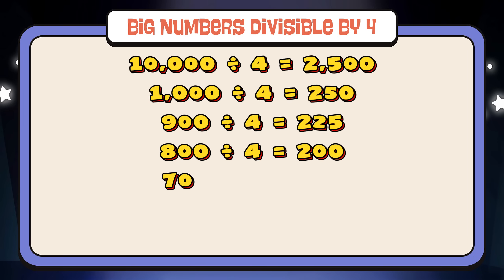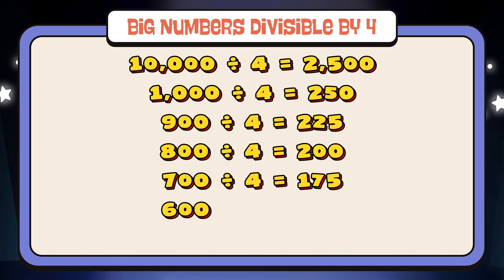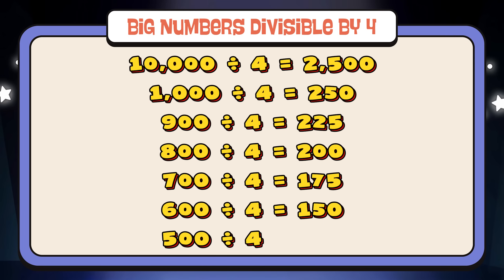Seven hundred divided by four is equals to one hundred and seventy-five. Six hundred divided by four is equals to one hundred and fifty. Five hundred divided by four is equals to one hundred and twenty-five.